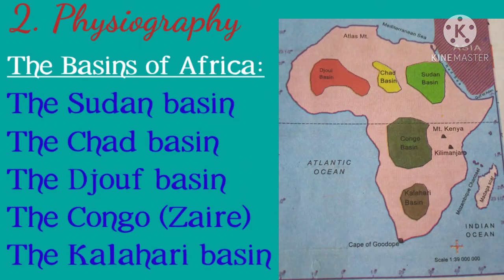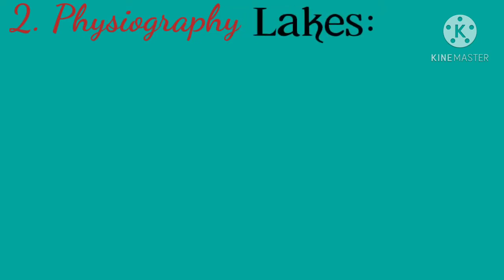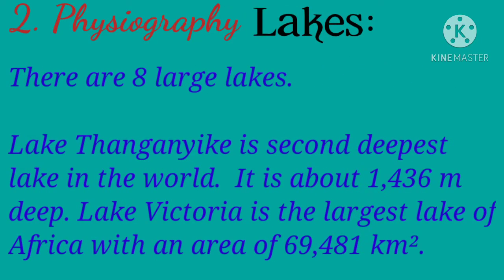There are eight large lakes in Africa. Lake Tanganyika is the second deepest lake in the world, about 1,436 meters deep. Lake Victoria is the largest lake in Africa, with an area of 69,481 square kilometers.